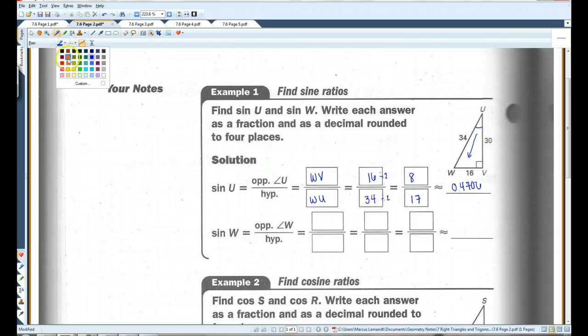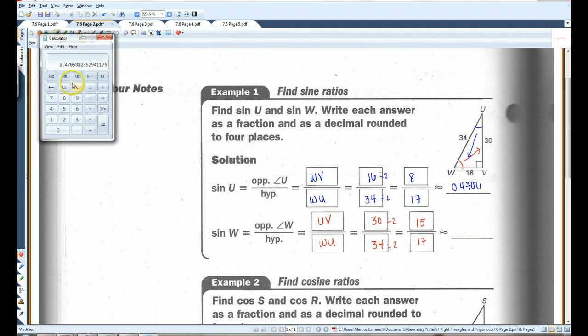Let's take a look at sine of W. Sine of W, this is the opposite side. So I've got UV and still WU is the hypotenuse. UV is 30, hypotenuse is 34. If you divide top and bottom by two, you get 15 over 17. Hopefully you guys see that this is an 8, 15, 17 triangle. 8, 15, 17 is a common Pythagorean triple. So 15 divided by 17 equals 0.8824.